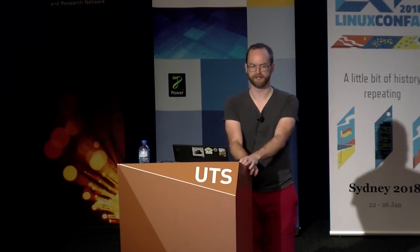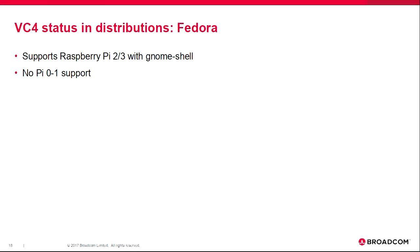We've got a lot of display support at this point and things are looking pretty good — not all these issues are well-supported in the closed source stack either. Fedora as of version 26 supports Raspberry Pi 2 and 3 with a full standard GNOME shell desktop using the open source graphics stack, both display and 3D. Fedora doesn't support Raspberry Pi 0 and 1 because those have an older ARM CPU that Fedora doesn't build for — everything else would be in place.